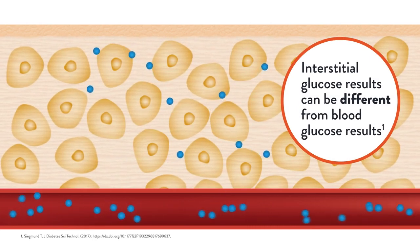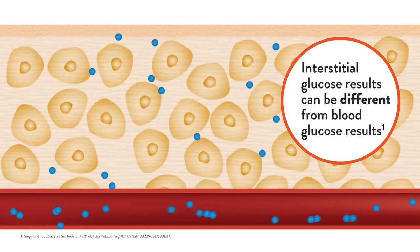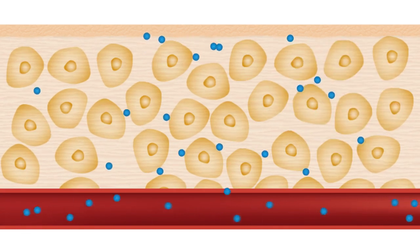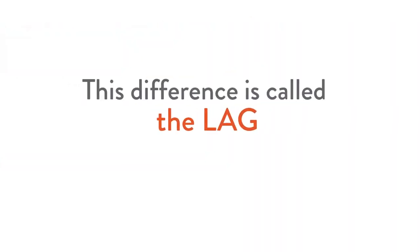Interstitial fluid glucose results can be different from blood glucose results because of the time it takes the glucose to move in and out of the capillary system. This difference is called the lag.